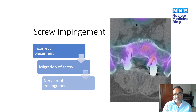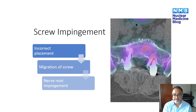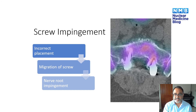Screw impingement can occur because either the screw has been incorrectly placed in the first place, or there has been migration of the screw due to loosening. If it impinges on the lateral recess of the spinal canal, it can result in nerve root impingement.